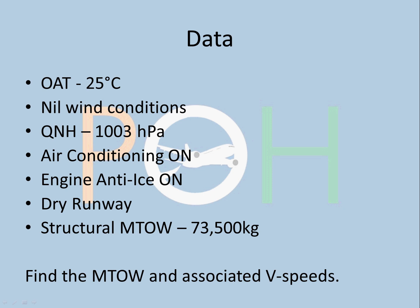I want you to note down this data as you solve the problem with me. The data is: OAT is 25, nil wind conditions for simplicity, QNH is 1003, air conditioning is on, engine anti-ice is on, dry runway, and the structural weight of this aircraft is 73.5 tons. The question is: find the MTOW and associated V speeds.